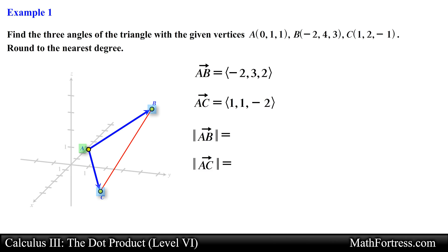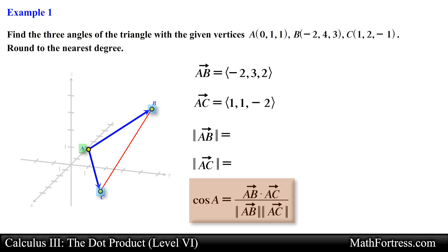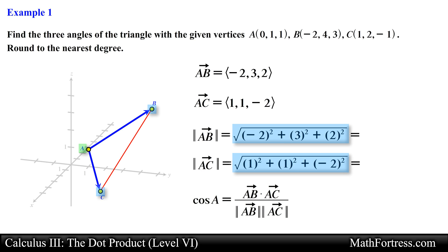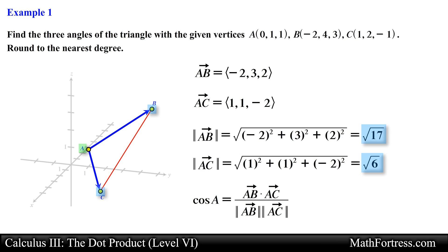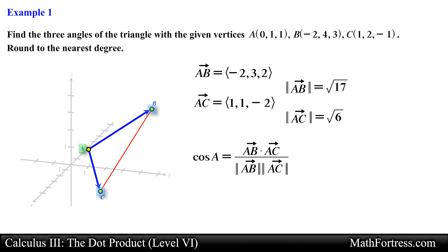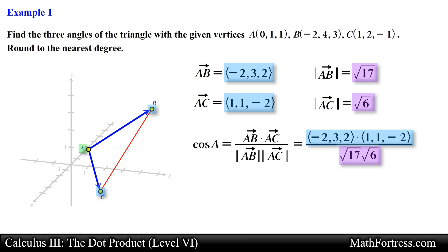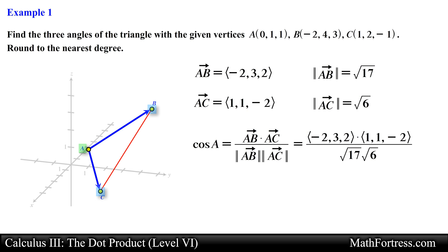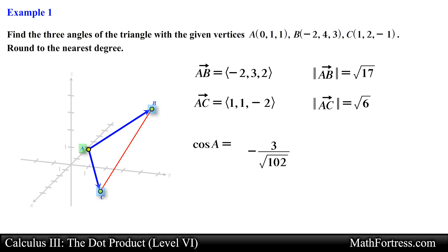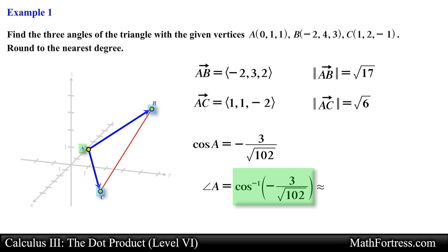Next let's find the magnitude of each vector. We will need them when we make use of the geometric definition of the dot product. Computing the magnitudes we obtain the following values. Next we use the geometric definition of the dot product to find angle A. Substituting the values and computing the dot product and multiplying the magnitudes, we obtain a value. Finally, taking the inverse cosine of this value and approximating the answer, we obtain 107 degrees for angle A.